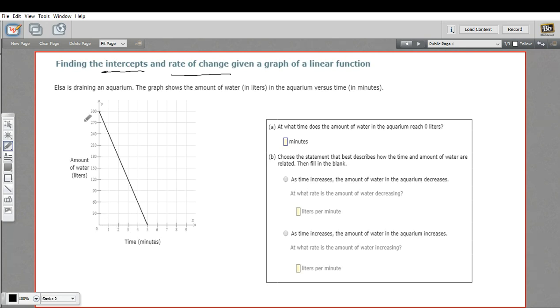And you'll notice that at minute zero, we're at 300 liters. And then this line just goes down until we get to minute five, where we're at zero liters. And that makes sense because they're telling us in the problem that this is about draining an aquarium. So the aquarium must hold 300 liters to start with, and then it takes five minutes to drain out all the water.